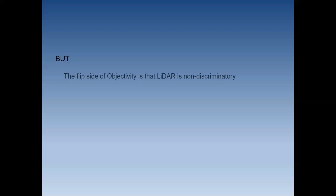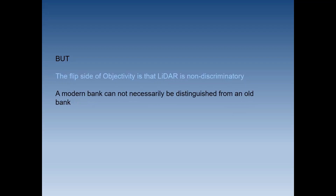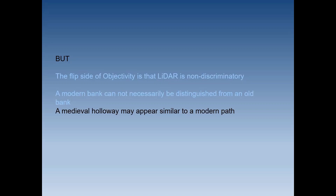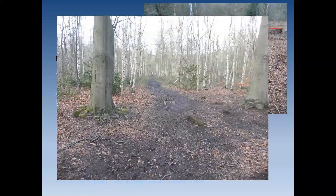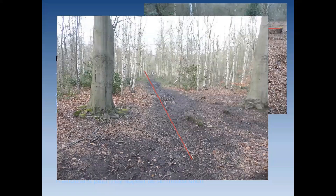The flip side of LiDAR's objectivity is that it's non-discriminate. A modern bank cannot necessarily be distinguished from an old bank; a medieval holloway may appear similar to a modern path; a fallen tree covered in bracken may give a similar signal to a length of bank; an overgrown fence may appear as a possible bank; and a woodland path may appear as an infilled ditch. So you really need to go and see these things to have any certainty of what's been found.